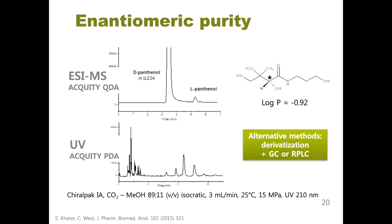In a fourth analysis example, SFC is also a very good method for chiral separations when enantiomeric purity needs to be assessed. We were asked to develop a method to quantify the minor enantiomer of dexpanthenol — a rather polar, non-UV absorbing molecule. In the literature it was most often derivatized, then analyzed by GC or reversed-phase HPLC. In our SFC method, no derivatization was required, and mass detection with electrospray ionization allowed excellent detection of the minor enantiomer.